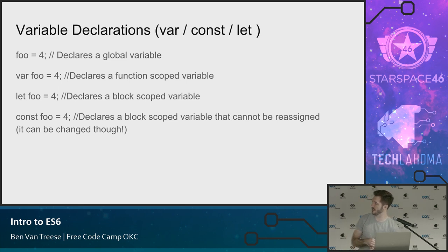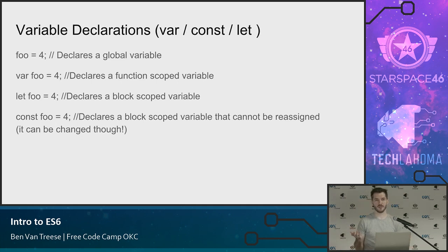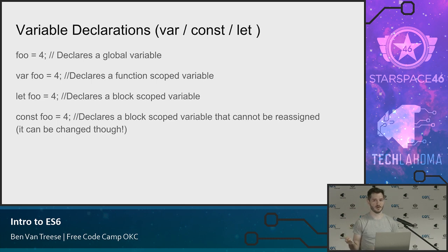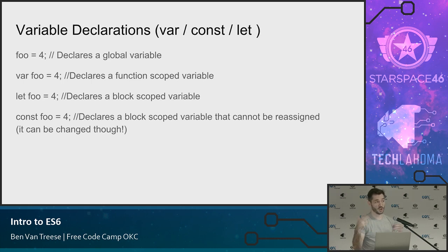Variable declarations: we have four ways to declare variables in JavaScript. The first is you can declare a variable without putting anything before it — don't do this, but you can — and it makes a global variable. In a browser, every variable is a variable on the window object. So if you say foo equals four, you actually made window.foo equal to four. Don't do this in general, because you're going to do something weird where a function uses foo internally expecting it to be a new empty variable, and it won't be.